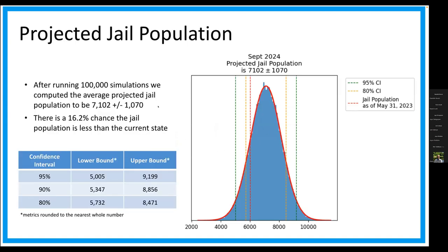We found that as of September 2027, our jail population is going to be upwards of 7,000, give or take about 1,000 people. This is significant because the Department of Corrections actually came out with a statement saying that our jail population come September 2024 is going to be upward of 7,000, which is obviously the reverse direction that we want to go if we want to close Rikers and drastically decrease our jail population.